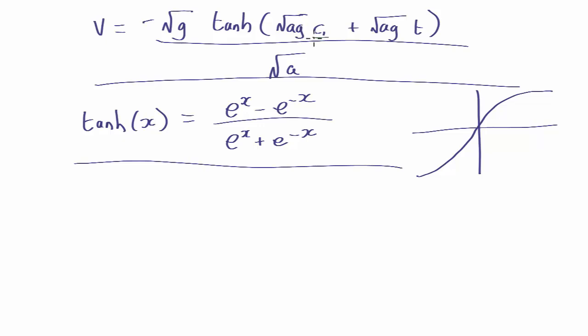So our first step is to work out what this constant c here is. Now, normally the way you work out constants in these solutions is by looking at the boundary conditions, which might mean the starting point or the end point or some point where you know the velocity and time. In this case, we know the velocity at time 0 equals 0. So we need this to equal 0 when t equals 0. What does that tell us? Well, we know that the hyperbolic tan of something is 0 when the something inside is 0 from the plot there.